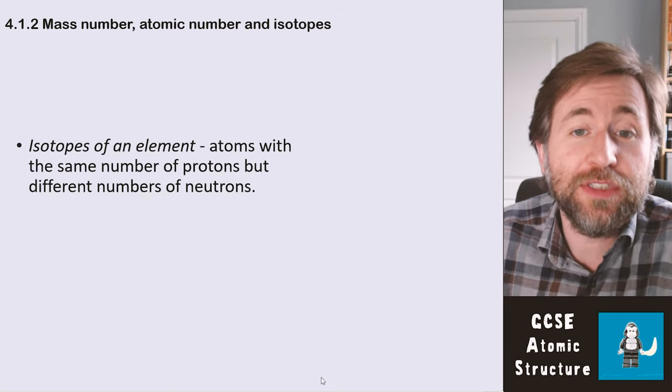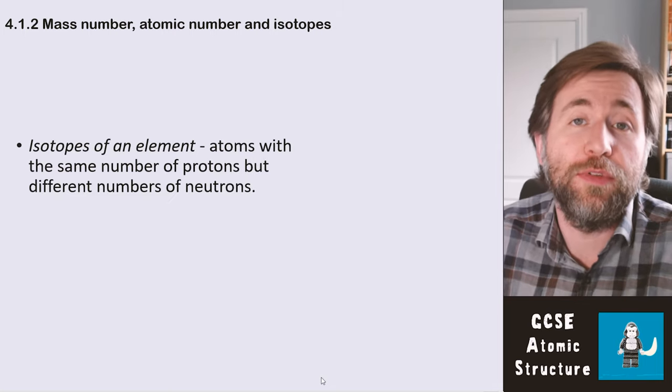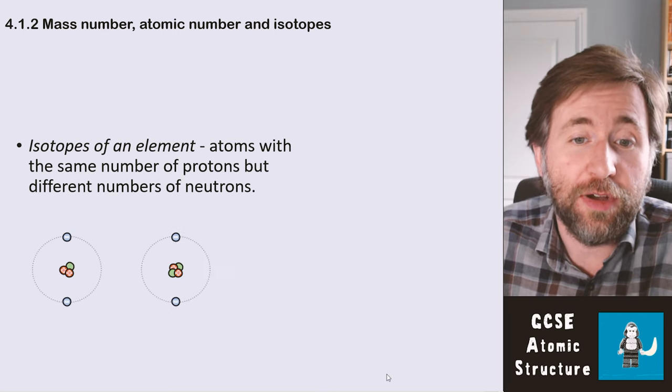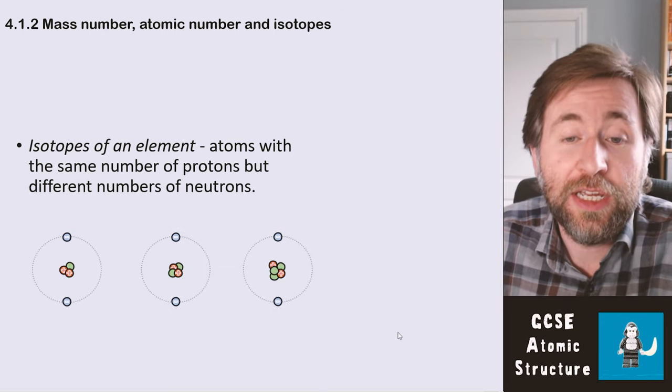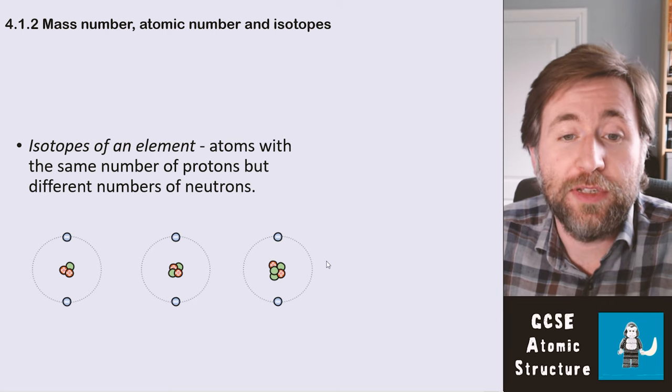Isotopes of an element are atoms that have the same number of protons but different numbers of neutrons. An element is defined by the number of protons it has, but the number of neutrons can be different.